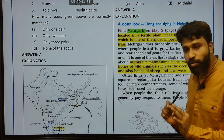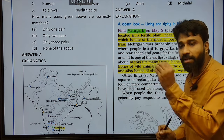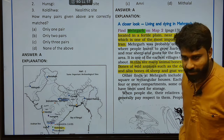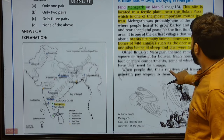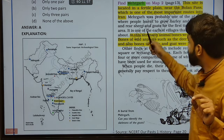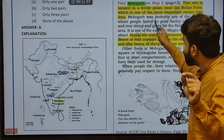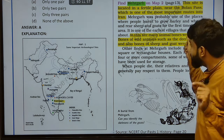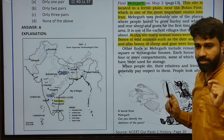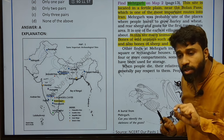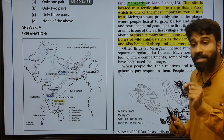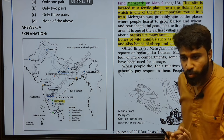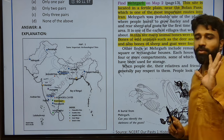Deer and pig were also found in the Mehergar Neolithic site located in the northwestern part of India, which is a route to Iran. It is very important that Mehergar was probably one of the places where people learned to grow barley and wheat. Neolithic people also knew about cultivation of barley and wheat — this is a clear testimony of settled communities who followed agricultural practices during Neolithic time.